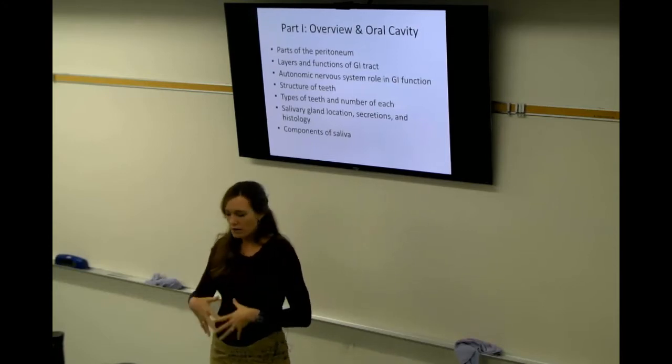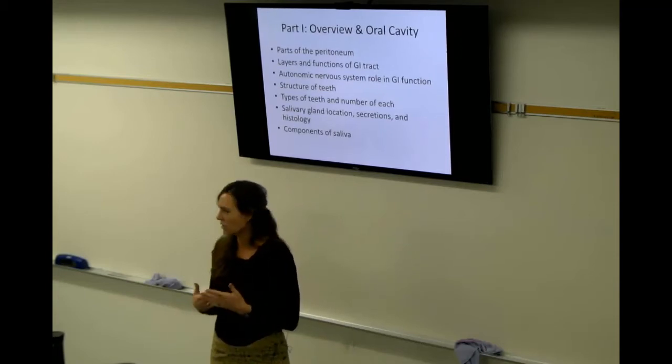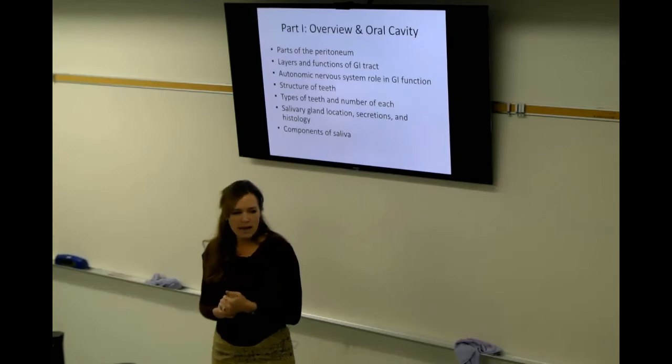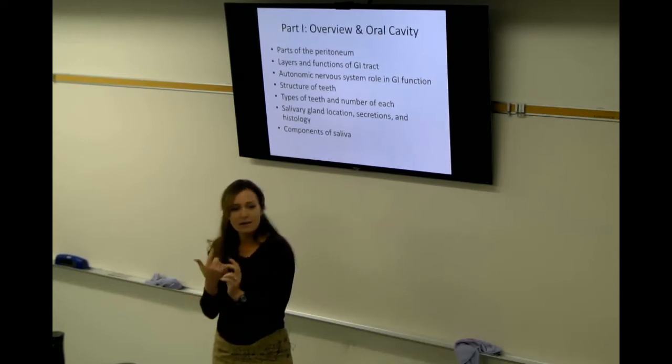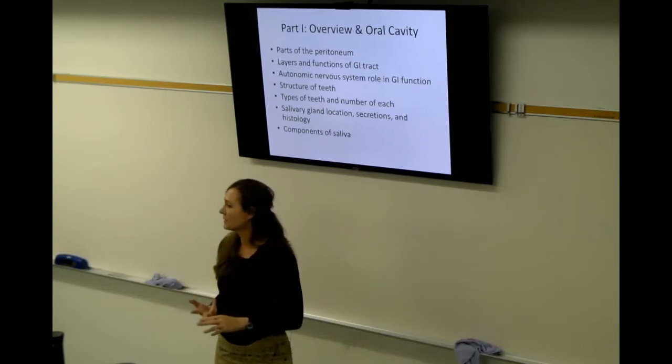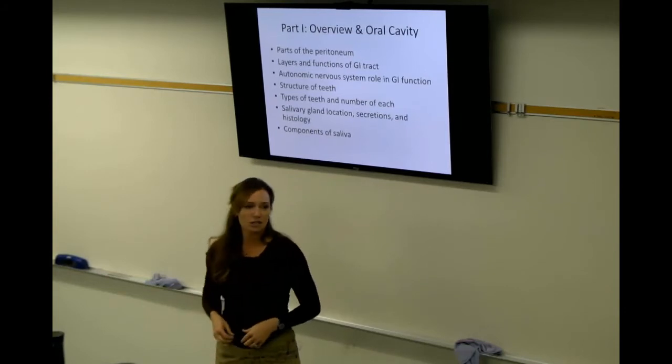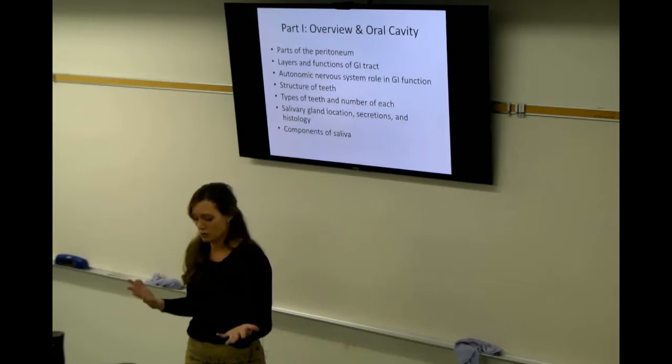Parietal and visceral. Parietal is going to be the bubble around the intestines. Visceral is going to actually be touching the surface of the peritoneum. What are the four main layers of the GI tract? The innermost layer touching food is going to be mucosa and then beyond that the submucosa and beyond that muscularis externa and then the outermost layer of connective tissue is the serosa.